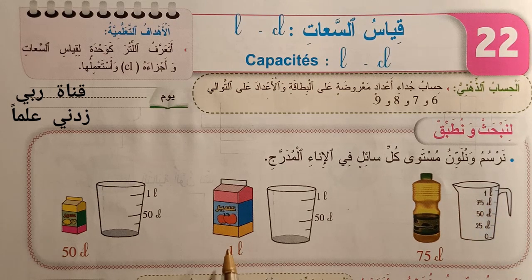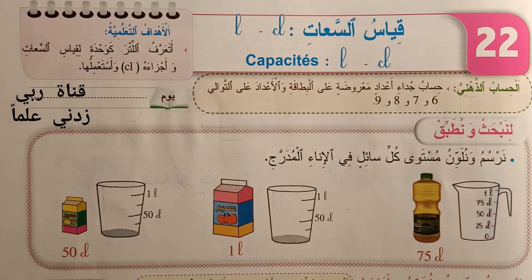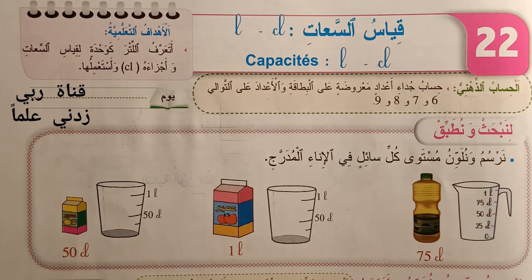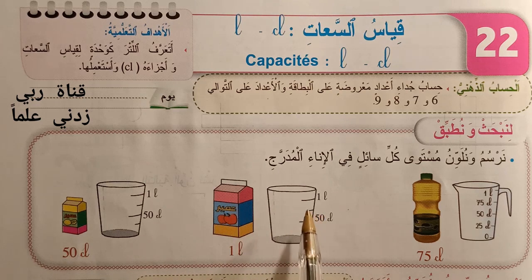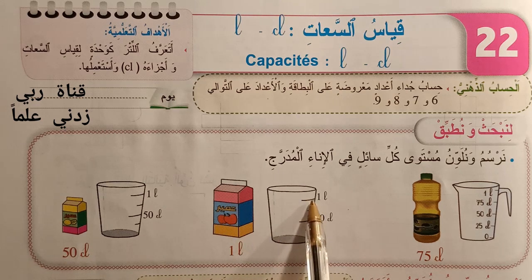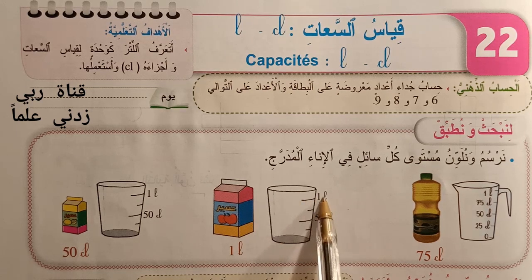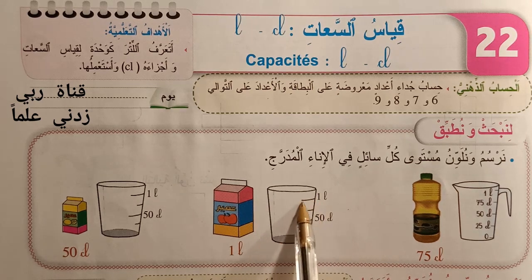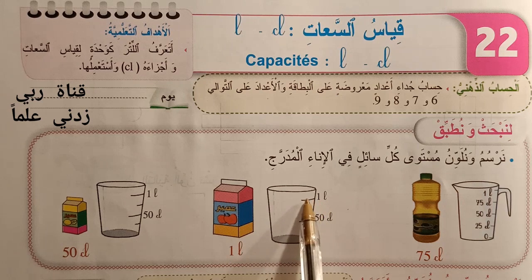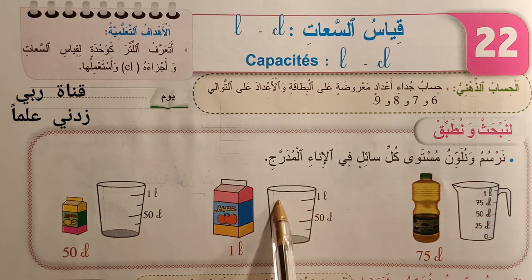في هذا العاصير لدينا 1 لتر. إذن عندما نصب هذا العاصير في هذا الإناء سيصل إلى هذا الخط 1 لتر. إذن نرسم خطاً أفقياً.